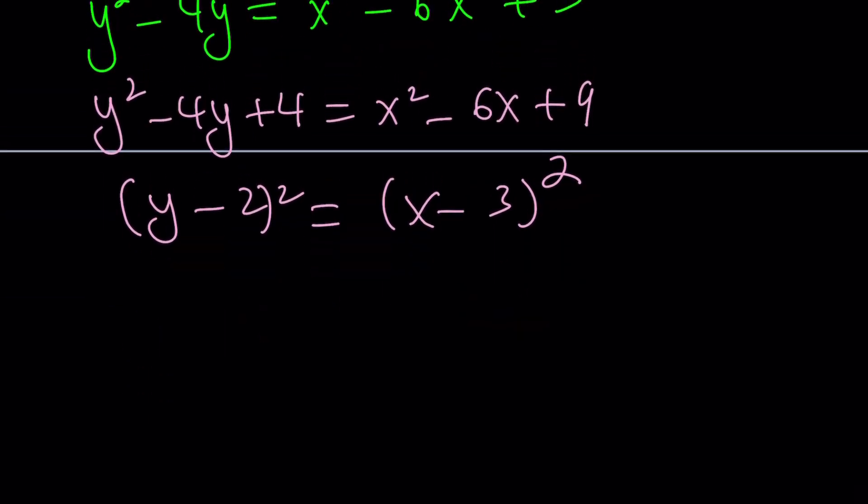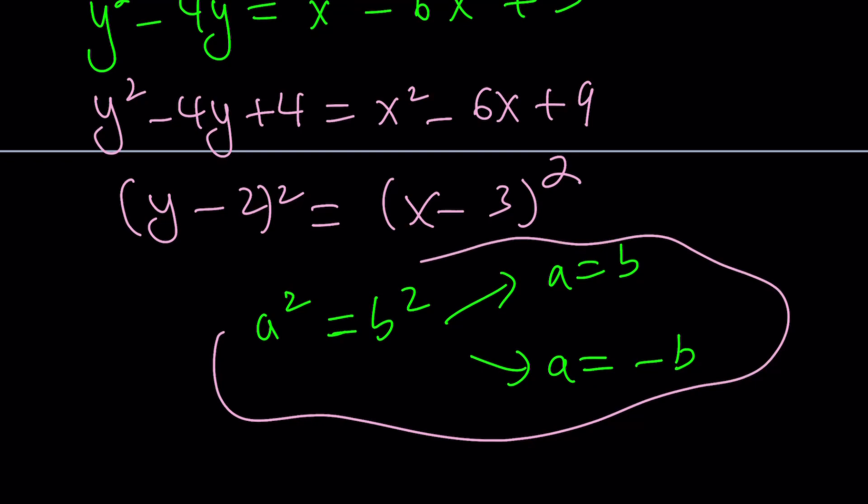Now, whenever you have an equation like a squared equals b squared, then you have two solutions: a is equal to b, or a is equal to negative b. And this comes from the fact that a squared minus b squared is factorable as difference of two squares. All righty? Now, let's go ahead and apply this to our situation.